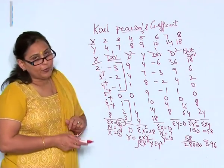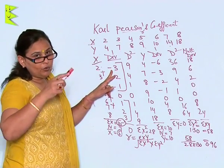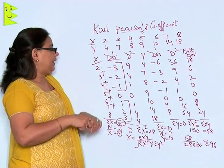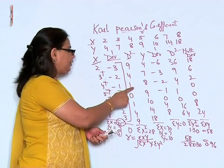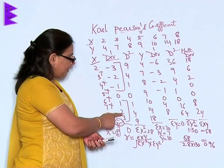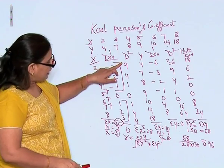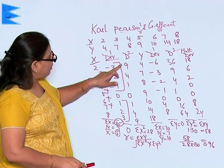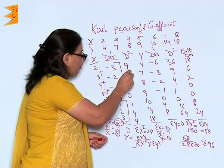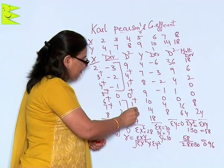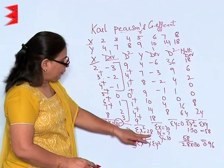Now the deviation squared — forgetting the plus or minus signs and squaring each: 3 squared is 9, 2 squared is 4, 1 squared is 1, 0 is 0, 1 squared is 1, 2 squared is 4, 3 squared is 9. Adding all these: 9 plus 4 plus 1 plus 0 plus 1 plus 4 plus 9 gives sigma X squared equal to 28.